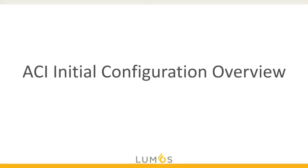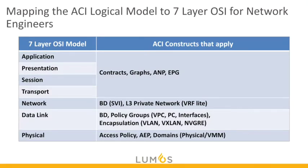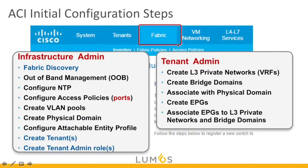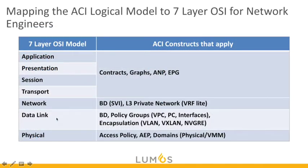Before we get started, let's map some traditional network constructs — the seven-layer OSI model — to how they match up with constructs inside of ACI. Layer one is physical, layer two is data link, layer three is network, layer four is transport, and layers five, six, and seven are session, presentation, and application, which we typically lump together. On the ACI side, the physical layer maps to access policy, AEPs, and domains — both physical and VMM. That's how we physically plug things into ACI.